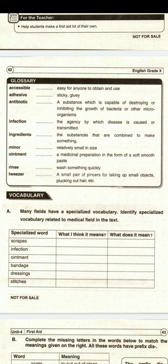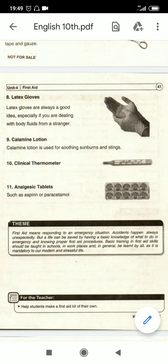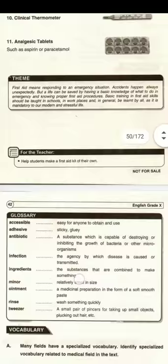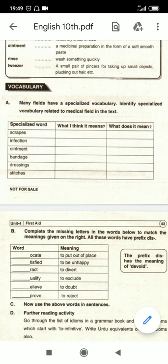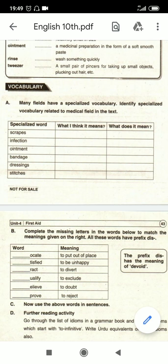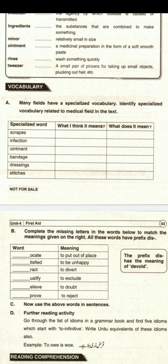Make sure that you have a pencil with you and you write the meaning of every difficult word in the book. For example, if you do not know the meaning of 'soothing' or 'sunburns', you will underline it and write the meaning on your book so that you can revise it whenever needed. Many fields have specialized vocabulary which we call jargon — j-a-r-g-o-n. Every field has jargon; banking and finance have different jargon. Here we identify specialized vocabulary related to the medical field in the text.